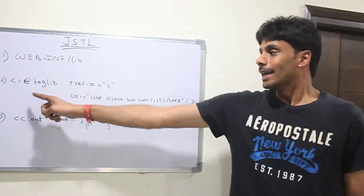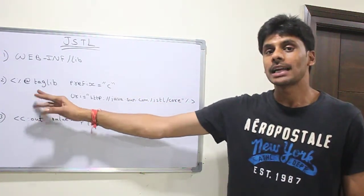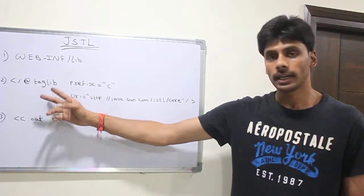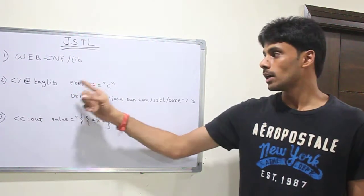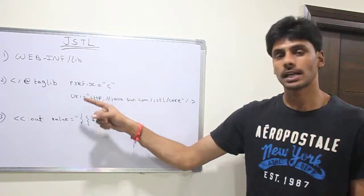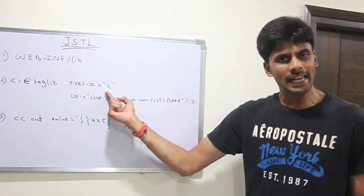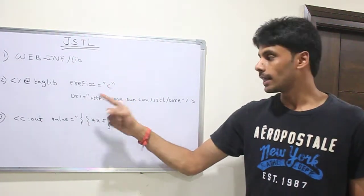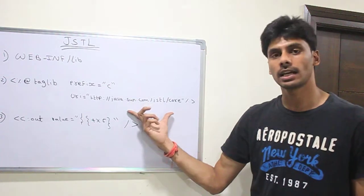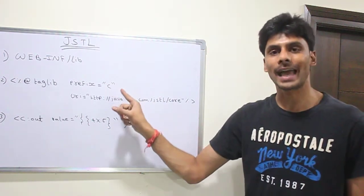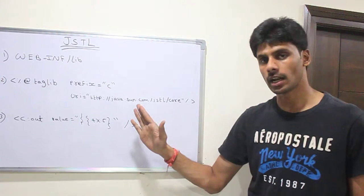Second, add the taglib directive. It is one of the directives available in JSP and using the prefix and URI. Prefix can be anything. Here I am using C and then URI is the unique URI for using the core tags available in the JSTL.